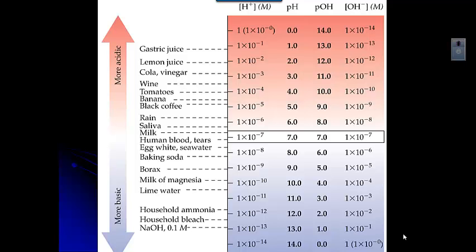Now let's look at some different pHs of things that you might be familiar with. Things that are more acidic have lower pHs. The more acidic things are, the lower their pHs are and the higher their pOHs. Things like the acid in your stomach — gastric juice — have very low pHs; that's a very, very strong acid. Things like tomatoes have a fair amount of acid in them, and even coffee has acid in it. Acid rain has pHs between 5 and 6.